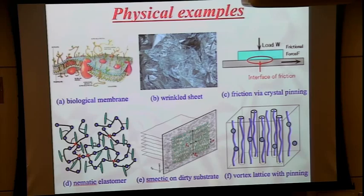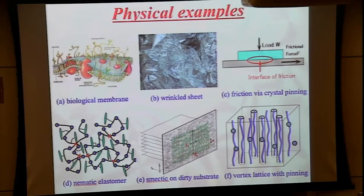But to a statistical mechanician and field theorist, you can zoom out and look at these imperfections, impurities, defects, or proteins and treat them as a kind of random perturbations. Here's a wrinkled sheet of paper where you've encoded, by wrinkling it, an array of wrinkles — and you might ask what is the roughness of this sheet, or how does it behave in the presence of these quenched-in perturbations. Friction is maybe the best known example, where you have two periodic elastic media — a crystal sitting on a substrate — and when you move this crystal past the substrate, you get this jerky stick-slip motion.